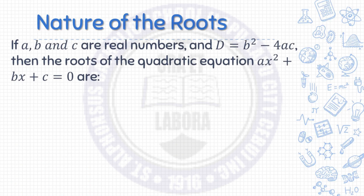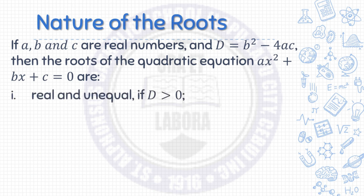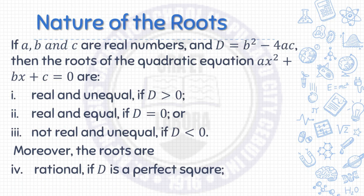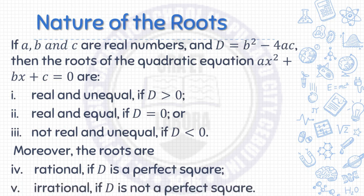If a, b, and c are real numbers and d equals b squared minus 4ac, then the roots of the quadratic equation ax squared plus bx plus c equals zero are: 1. Real and unequal if the discriminant is greater than zero. 2. Real and equal if the discriminant is equal to zero. Or, 3. Not real and unequal if the discriminant is less than zero. Moreover, the roots are rational if the discriminant is a perfect square, and irrational if the discriminant is not a perfect square.